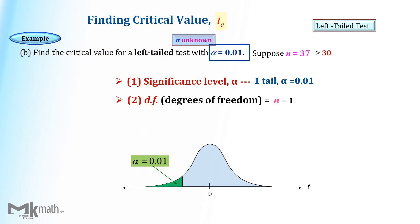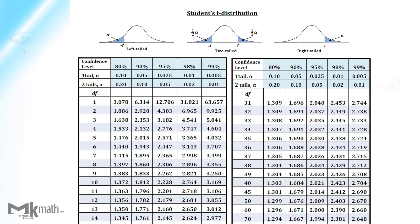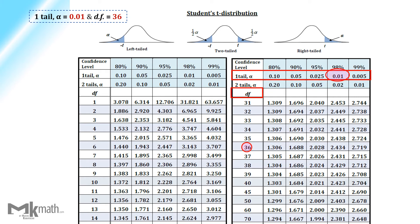Step 1: identify the significance level 0.01 as one-tailed alpha. Step 2: find the degrees of freedom by subtracting one from the sample size 37, which is 36, then look up the table. First, locate 36 degrees of freedom, then select 0.01 from the one-tailed alpha row. The intersection of those is the t-score 2.434.